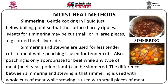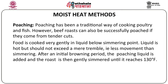In simmering, the meat is gently cooked in water or liquid with the temperature maintained below the boiling point — the bubbles barely ripple rather than boiling vigorously. Meats that are simmered are usually small cuts, though sometimes larger pieces such as corned beef silverside are also cooked by simmering. Poaching is a traditional method usually used for poultry or fish, though beef roast can be successfully poached if the beef is from a tender cut. In poaching, food is cooked very gently in liquid that is below the simmering point — the liquid is hot but should not exceed a mere tremble.